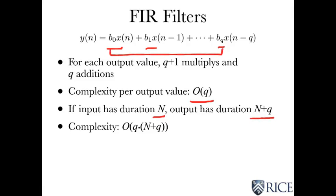Notice that the duration of the unit sample response here runs from 0 to Q, so the duration is Q plus 1. So using my old formula for the duration of the output is N plus the duration of the input plus the duration of the unit sample response minus 1. And that gets us the N plus Q.